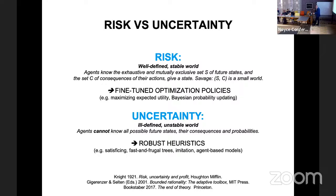I will talk today about one class of tools that are useful under uncertainty, and these are heuristics. Heuristics are rules that embody the art to focus on the important and ignore the rest. Heuristics can lead to good decisions in a world where we cannot forecast the best decisions. Examples are Herbert Simon's satisficing, fast and frugal trees, imitation, agent-based models — we use simple rules like the flocking of starlings.